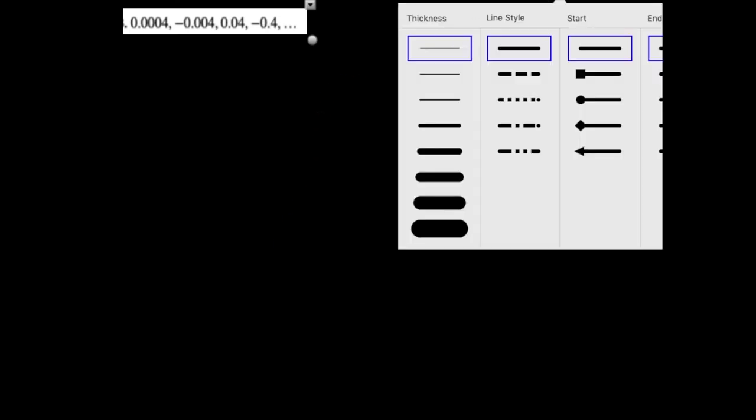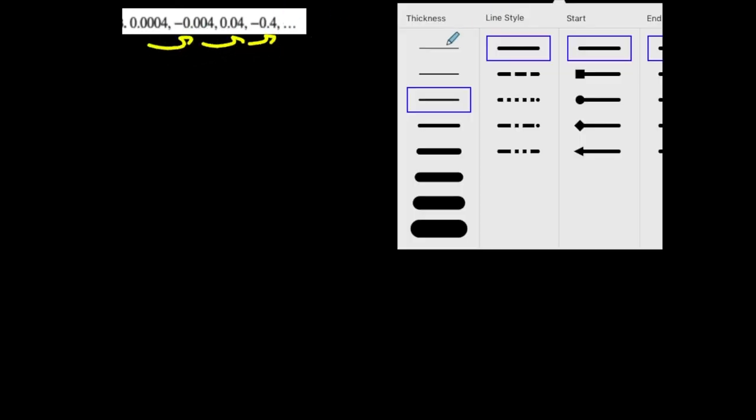I want to write the nth term of this geometric. How do I know it's geometric? I don't know until I analyze it. What am I doing from each term to get to the next one? So to go from, it's hard to tell by looking at it. What you can do to determine if it's geometric is to take the second term and divide it by the first one. So negative 0.004 divided by 0.0004.